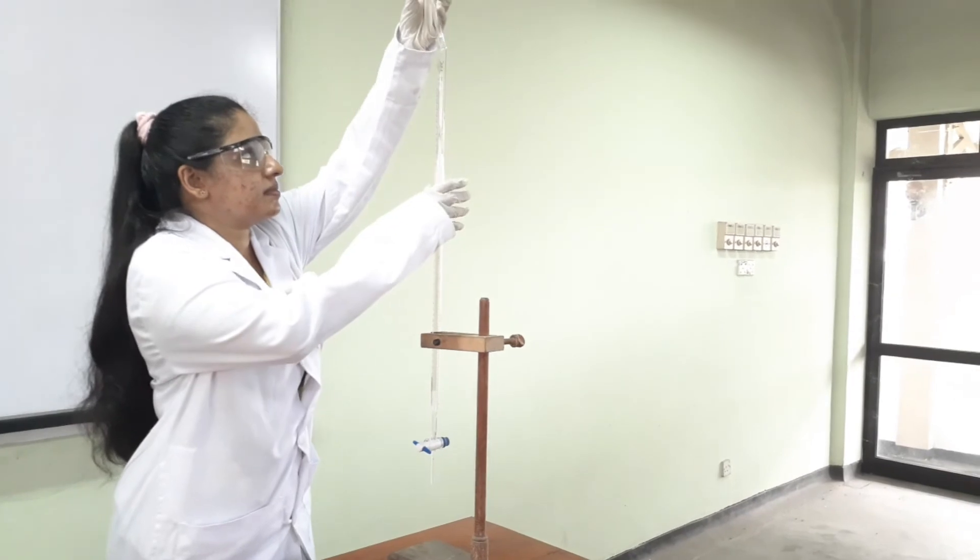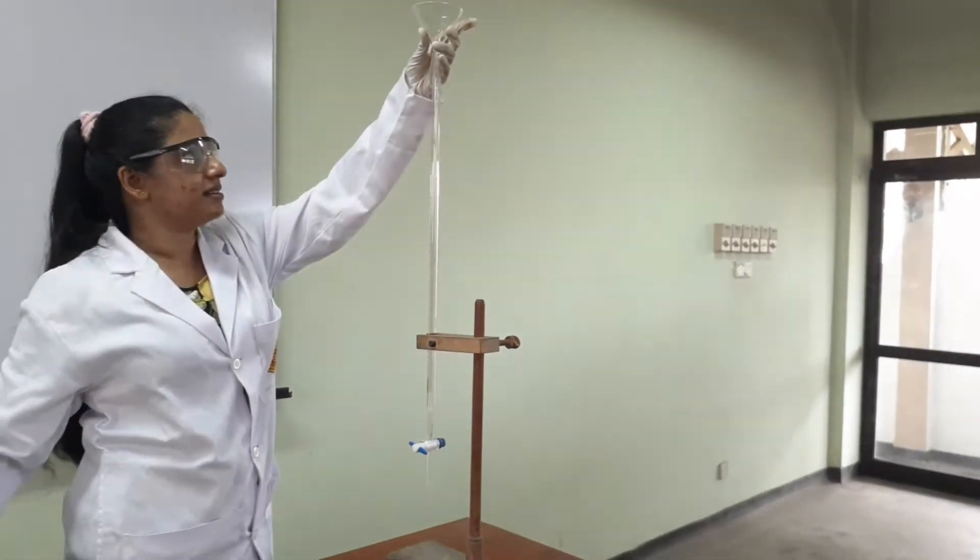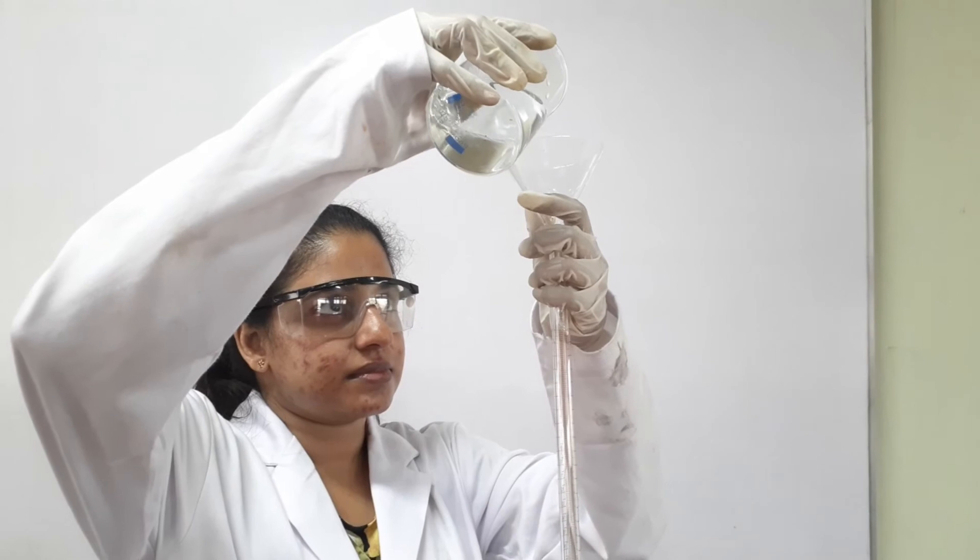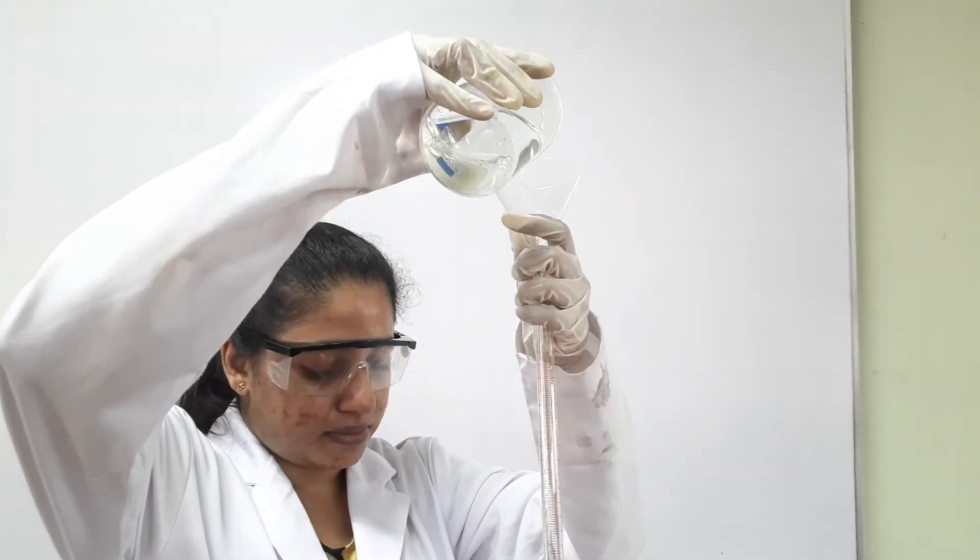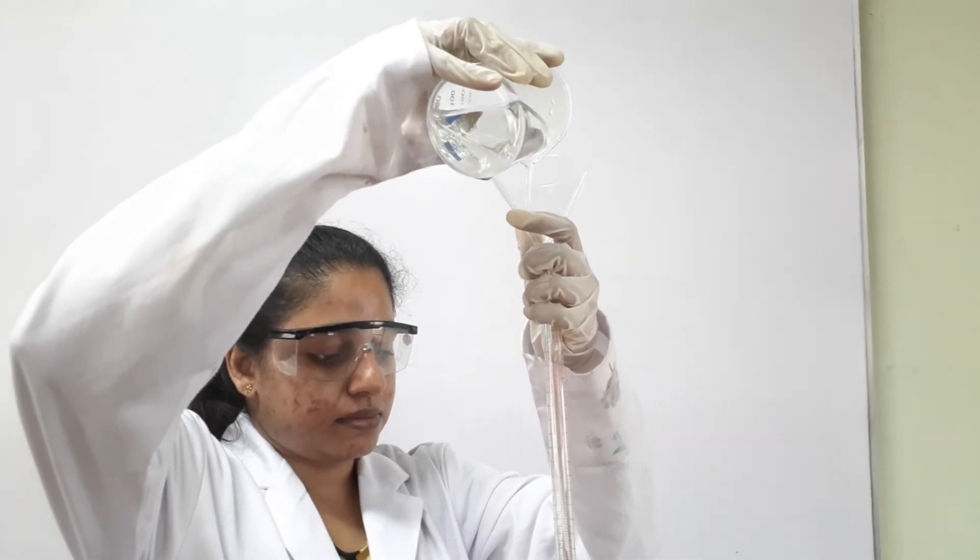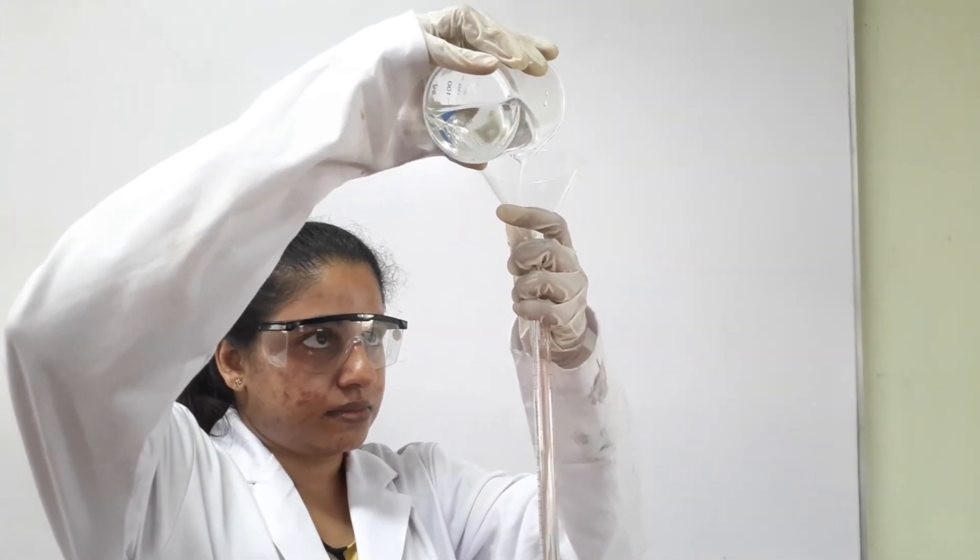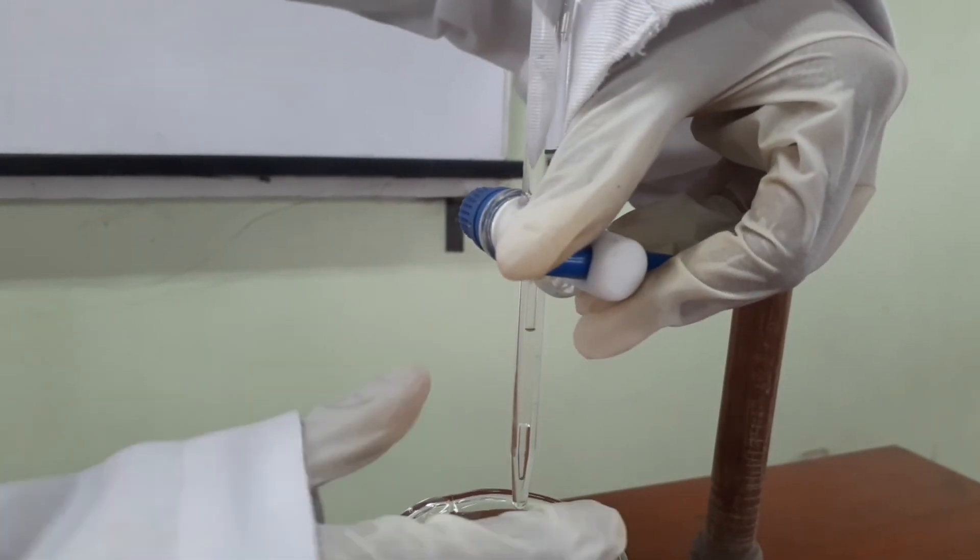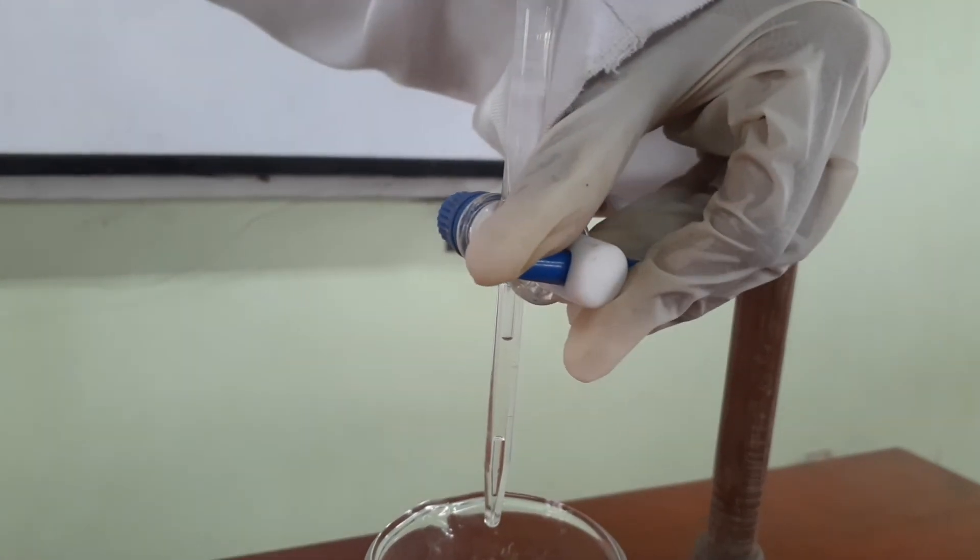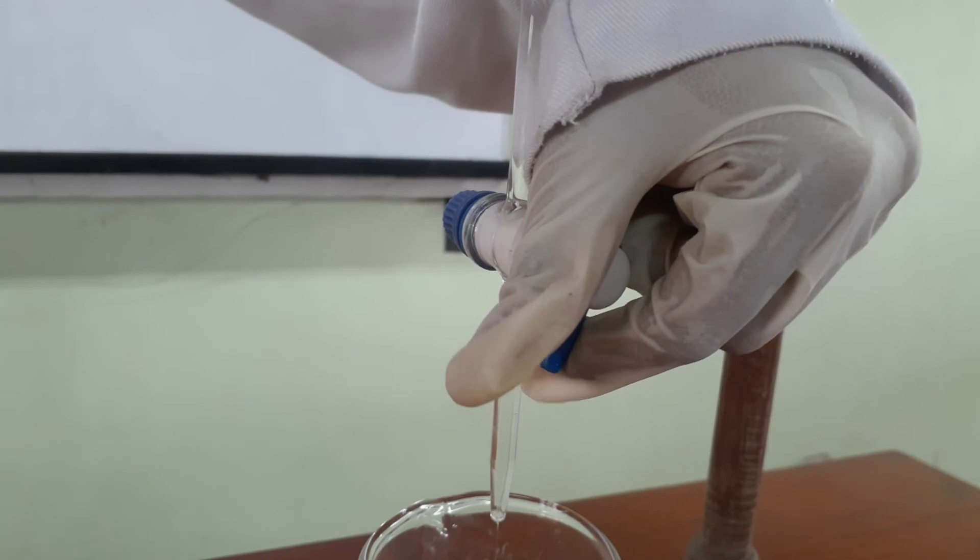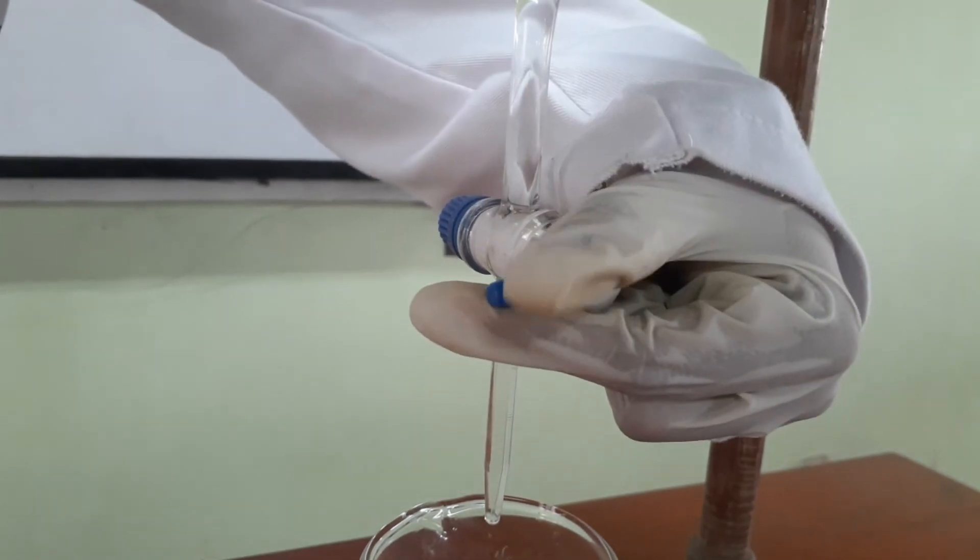Then place the funnel at the top of the burette, making sure the tap is closed. Then pour the solution into the burette up until it is filled 2 to 3 cm up above the 0 mark. Once it has been filled fully, take the funnel out of the burette. Then open the tap of the burette to let out some of the solution into an empty beaker, allowing the solution to fall from the burette tip. The tip must be checked if there are any air bubbles.